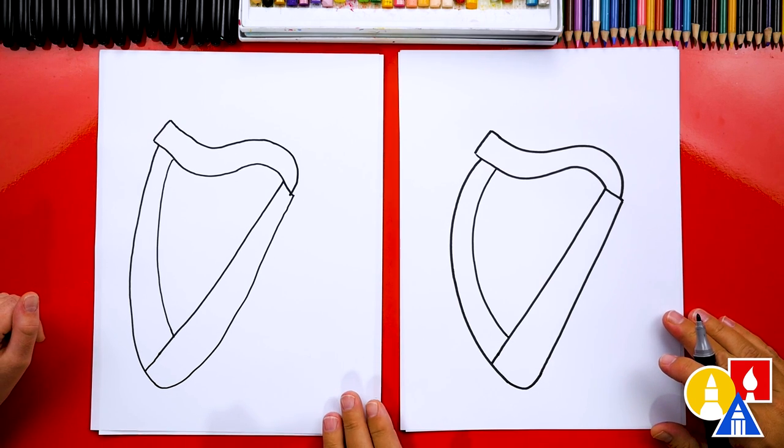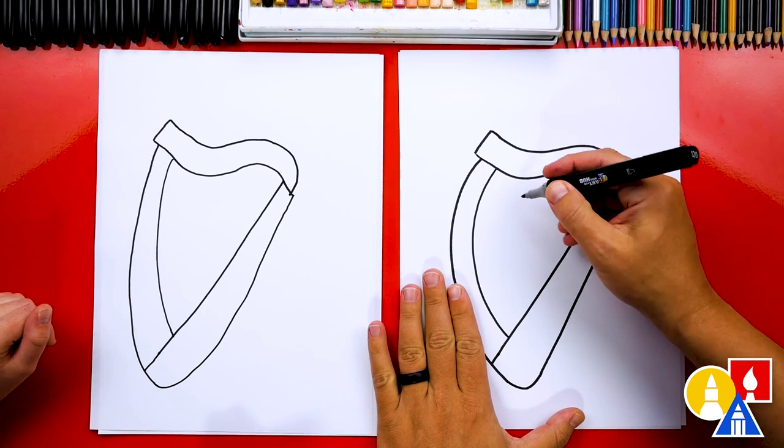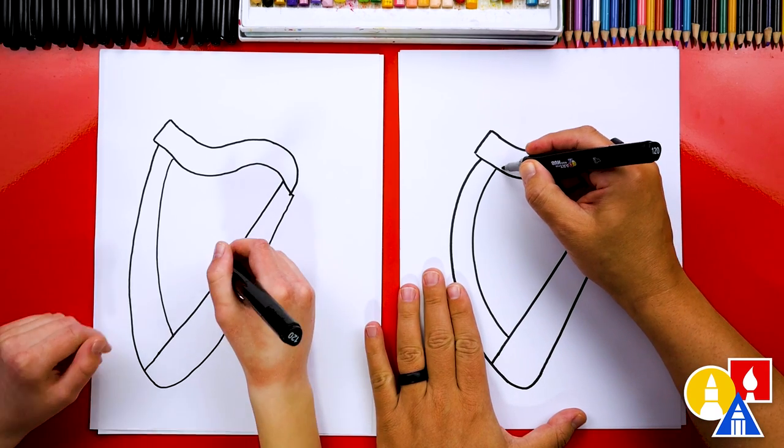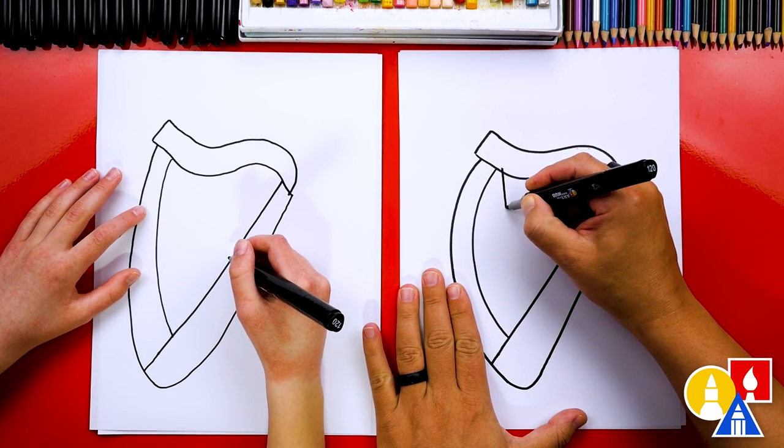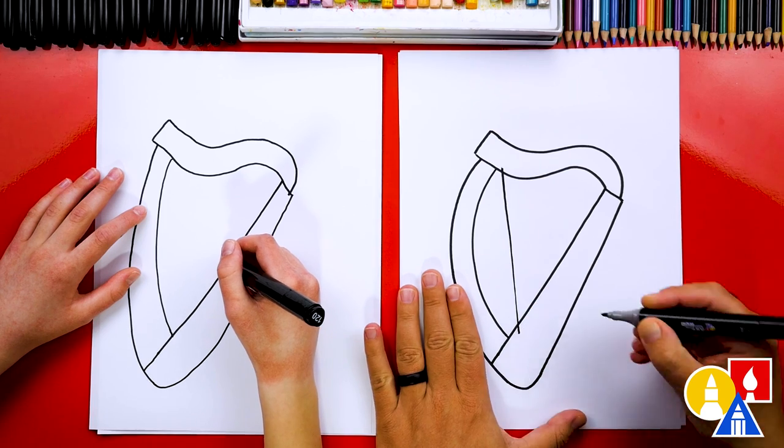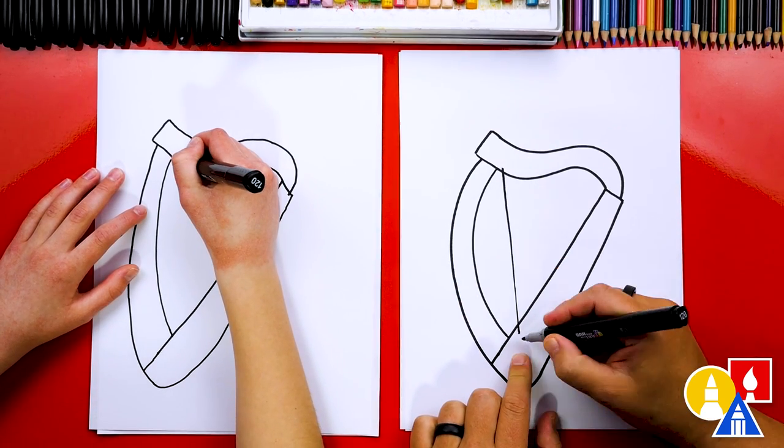Now, what are we missing on our harp? The strings. Let's start here and we're going to draw straight lines down. So I'm going to pull the line straight towards me like that. And I went a little past on the top and the bottom.